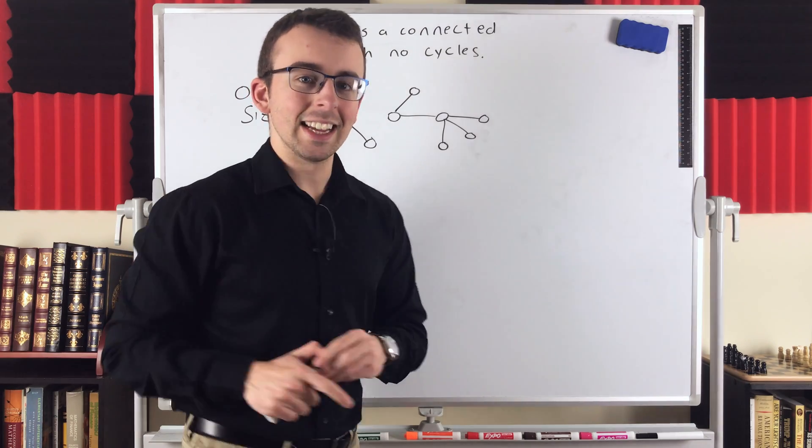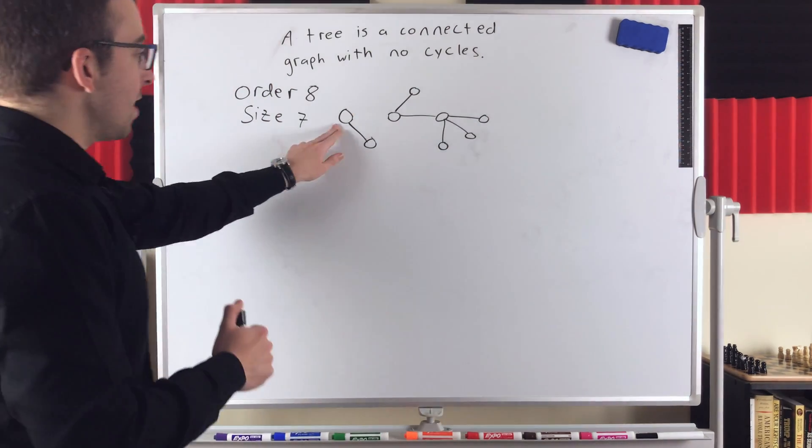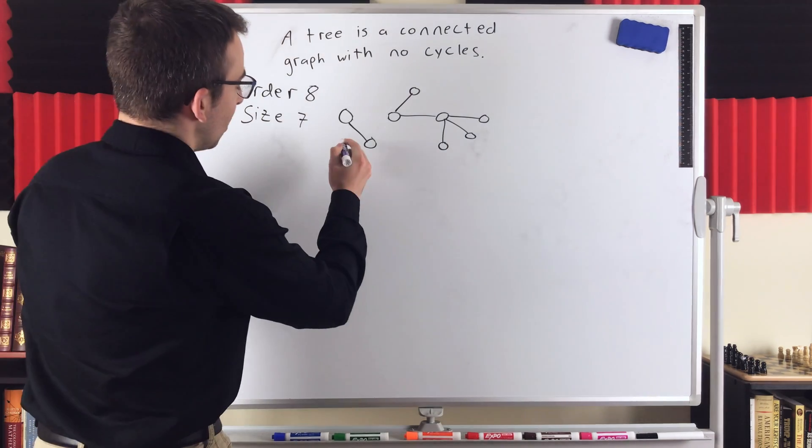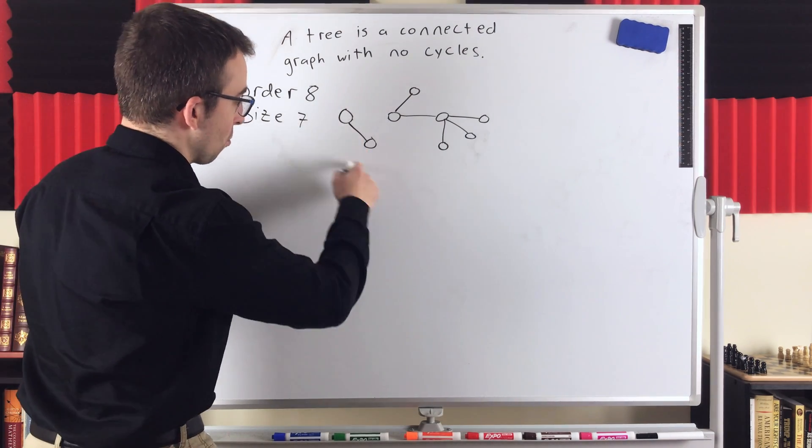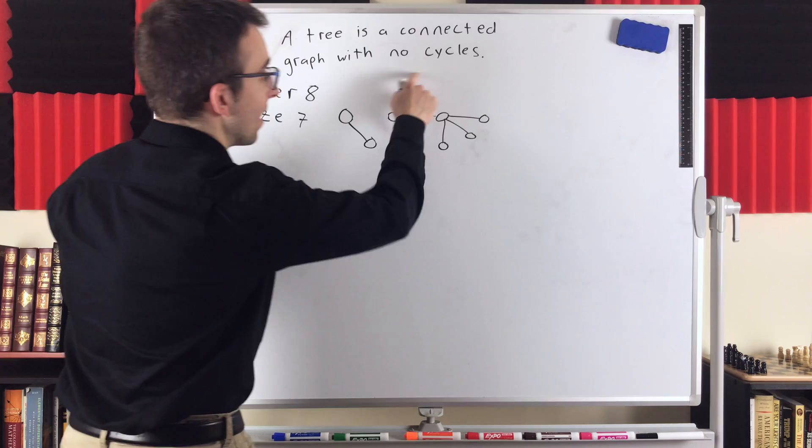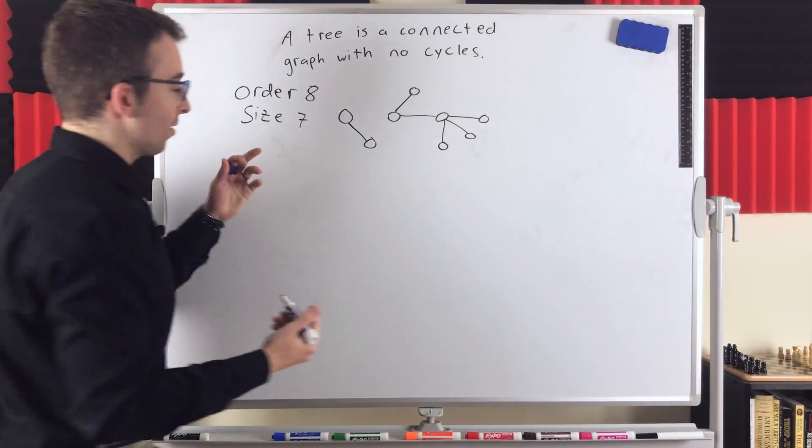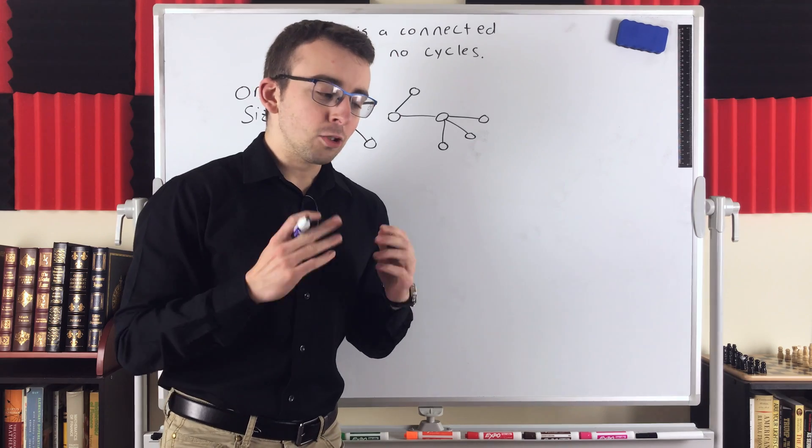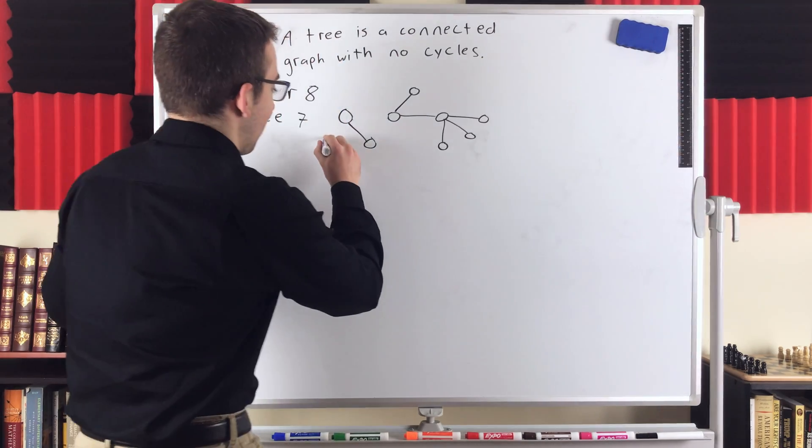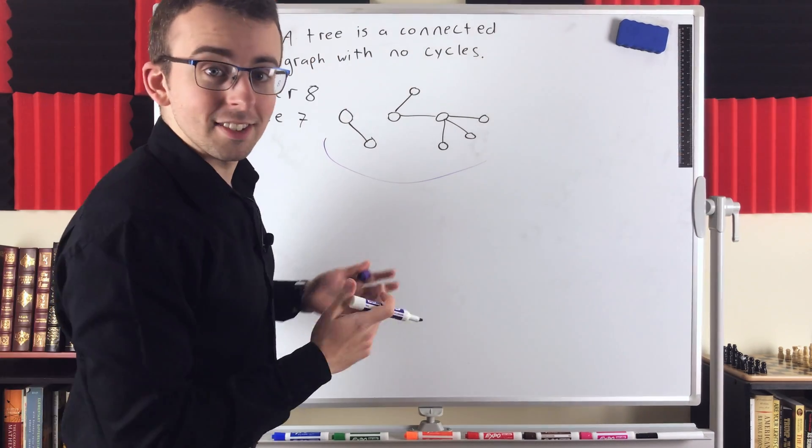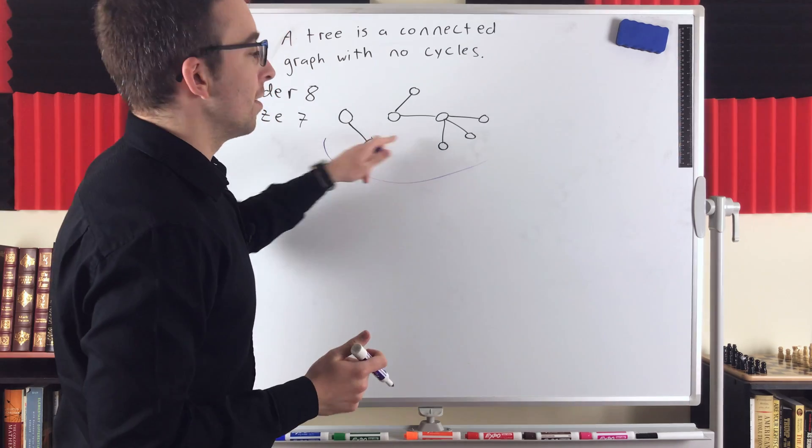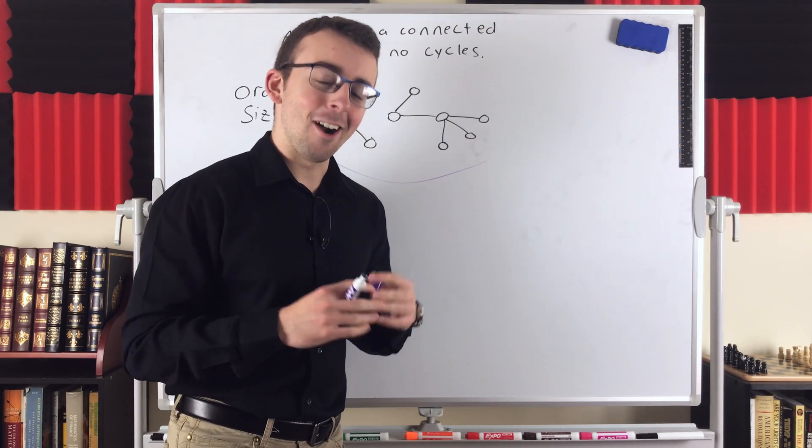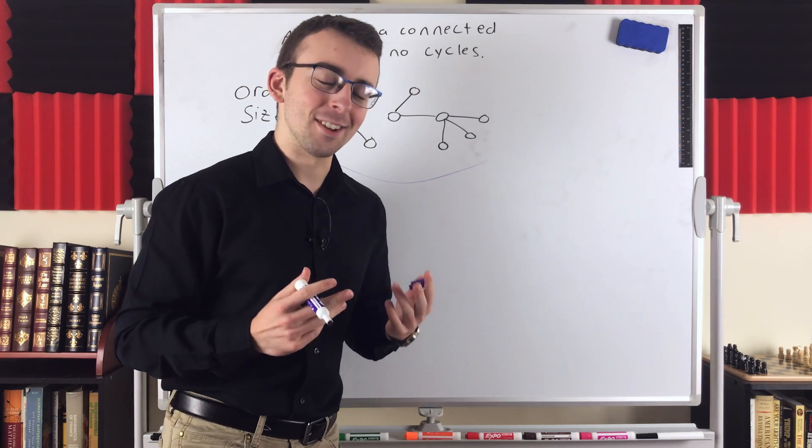That's another equivalent definition. Now, notice here what we're left with after we delete that bridge. What do we have? We've got a tree right here. This is a tree, and this is a tree. Both components are trees, because both components are connected graphs with no cycles. So what do you think you call that? This graph is not a tree, because it's disconnected. But its components are trees.